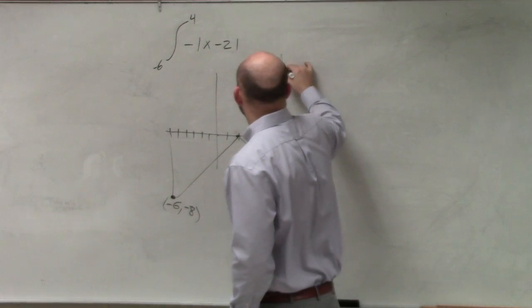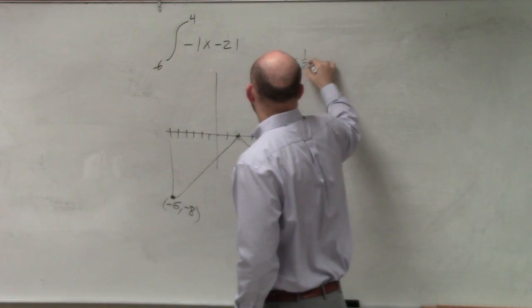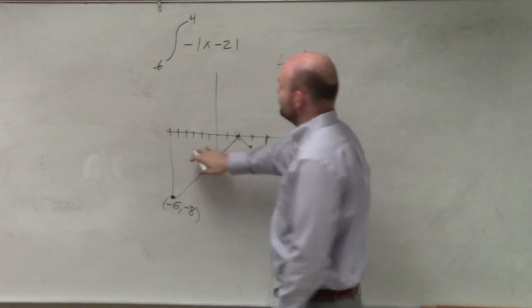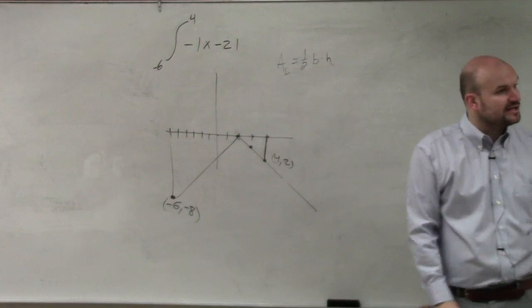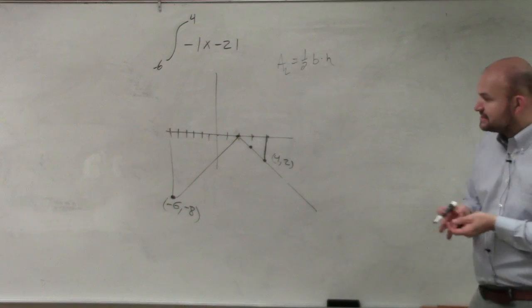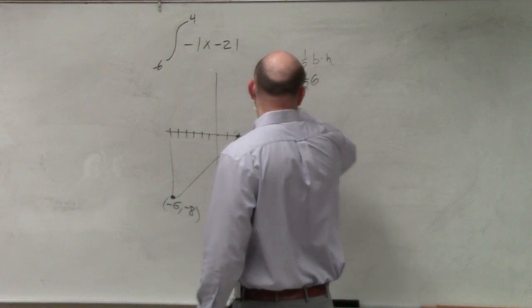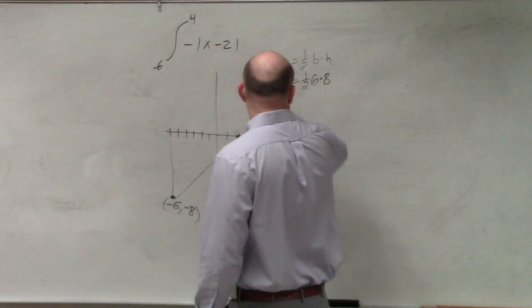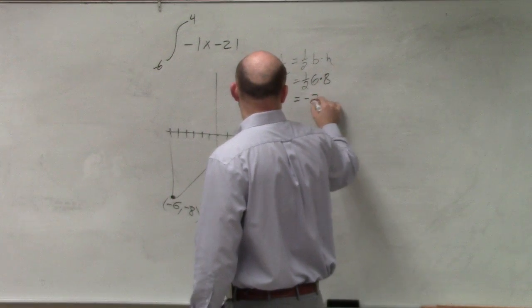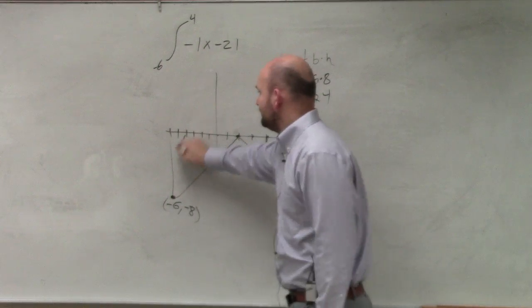So basically, we're just going to be looking at my area on my left, which is still 1 half base times height. Just remember, guys, that these two are negative areas. So we're going to be calculating, basically, the negative area, which is going to be 1 half 6 times 8, which is going to equal negative 24. It's a negative area.